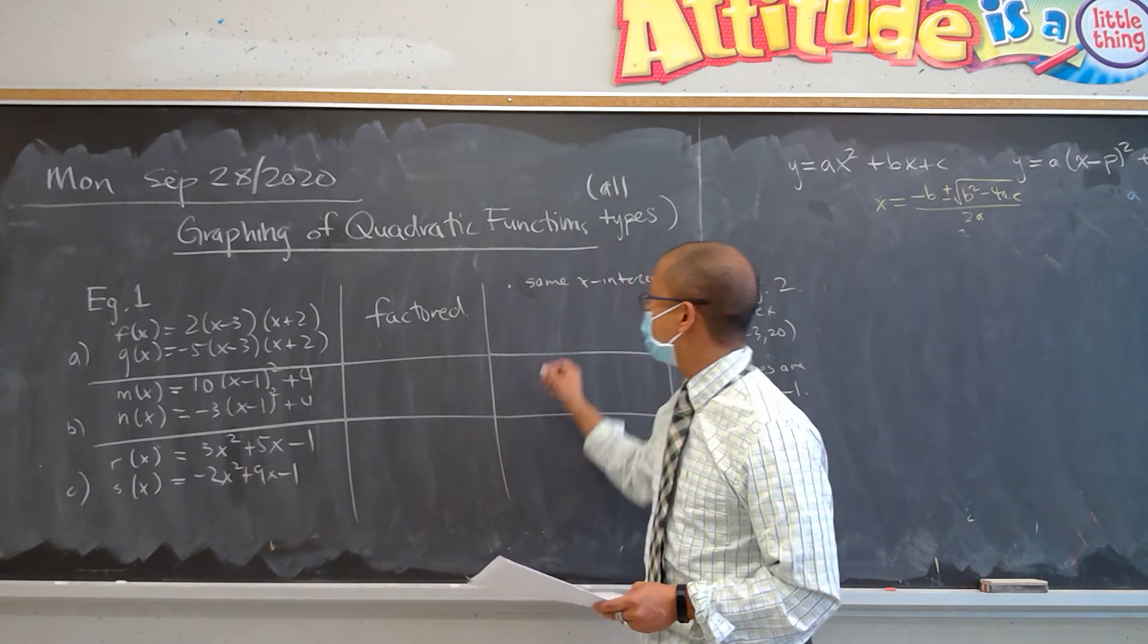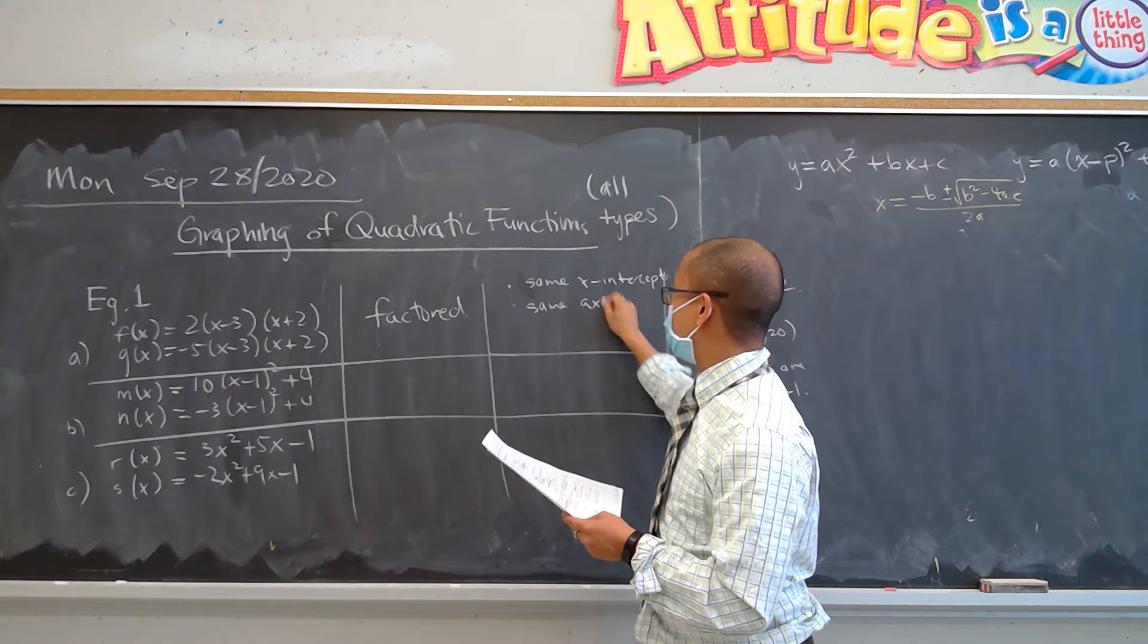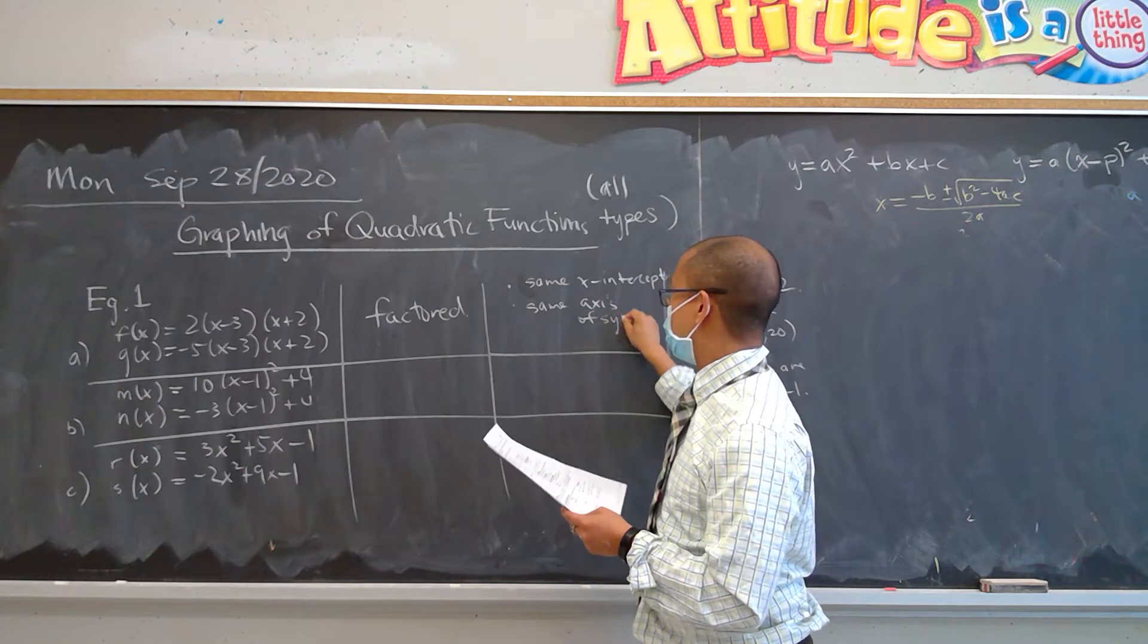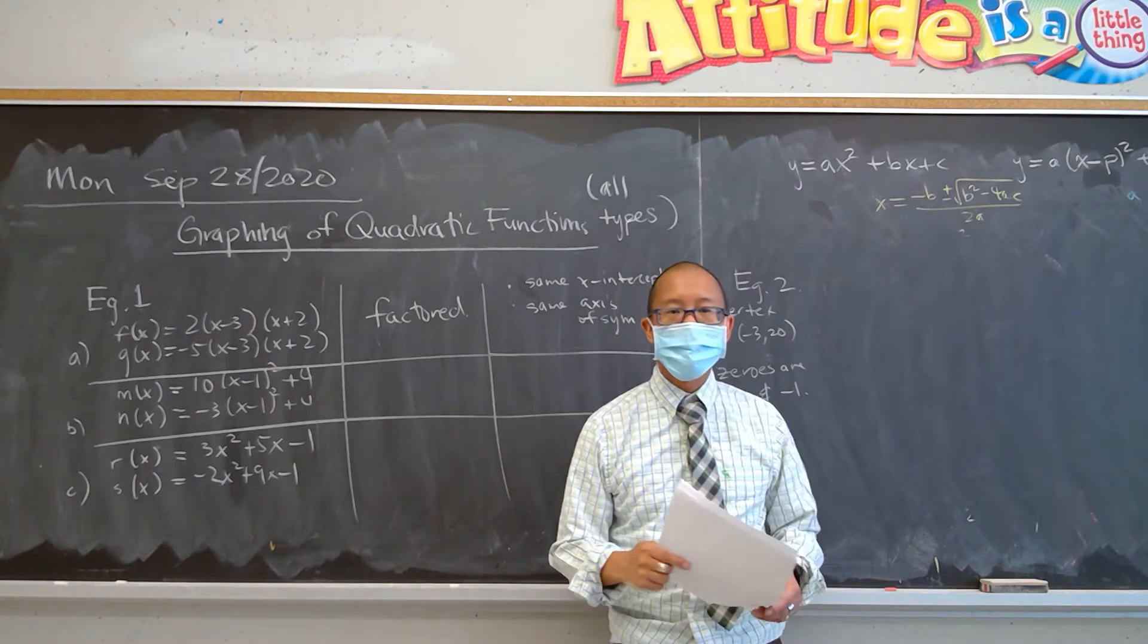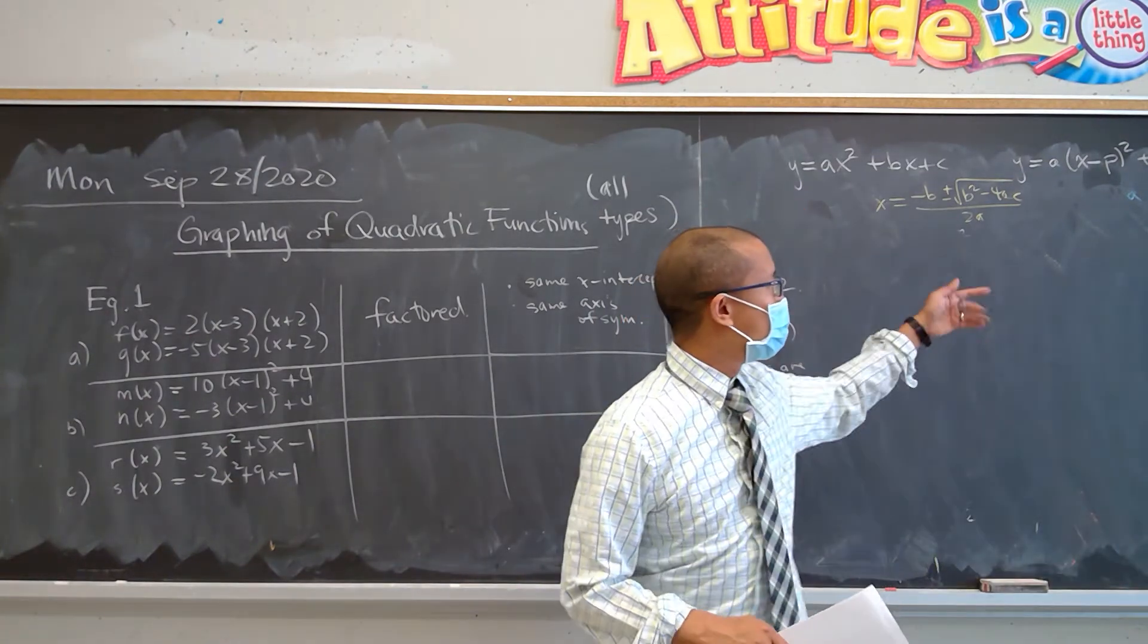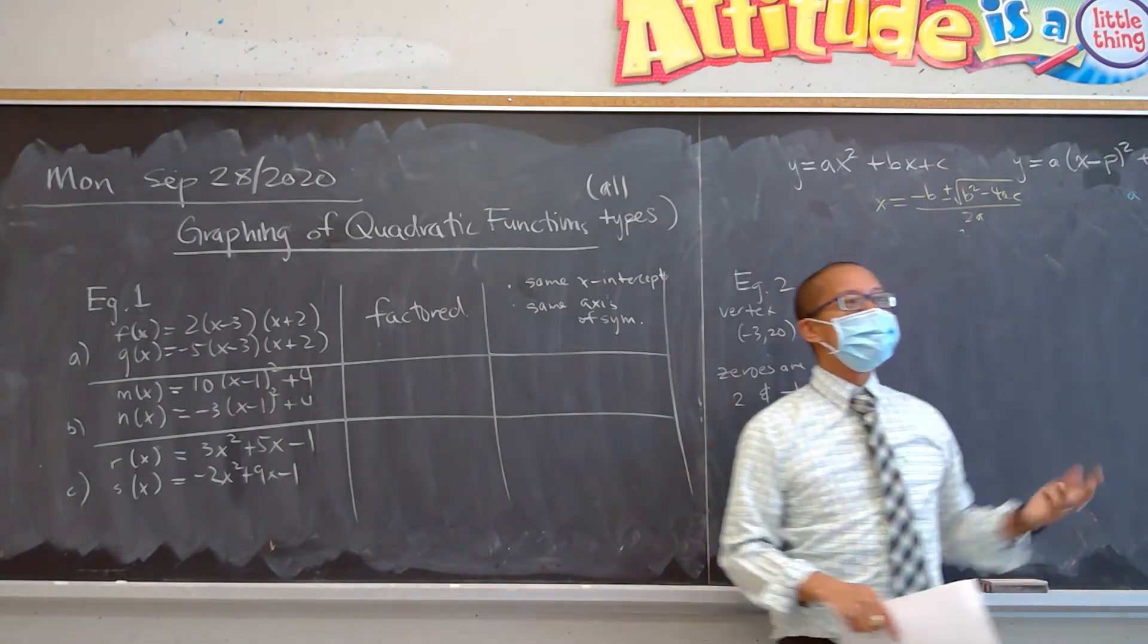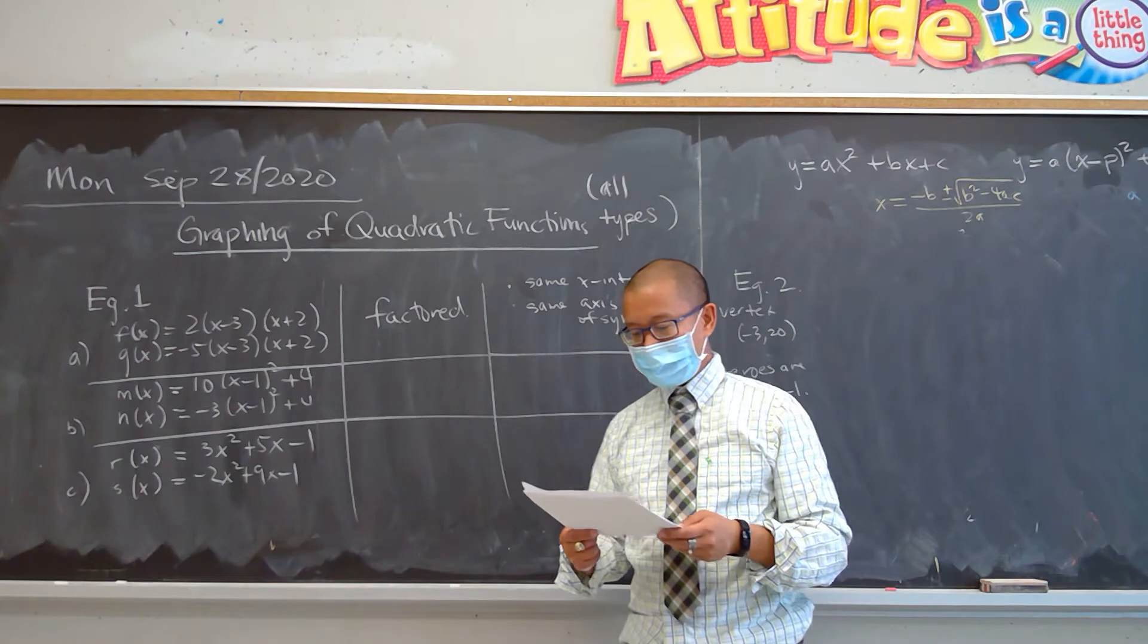That means also they have the same axis of symmetry. And again, what is axis of symmetry? Axis of symmetry is to add the two roots together and divide by 2, right? That's why a lot of you already know how to solve that.